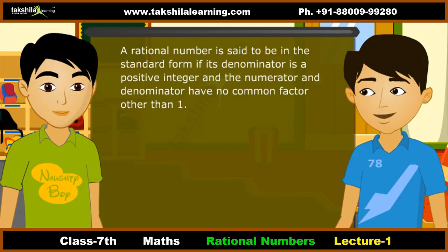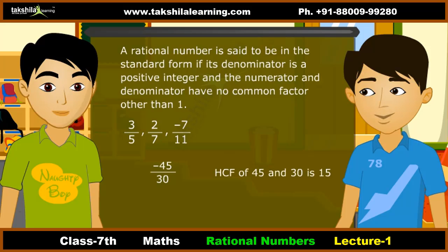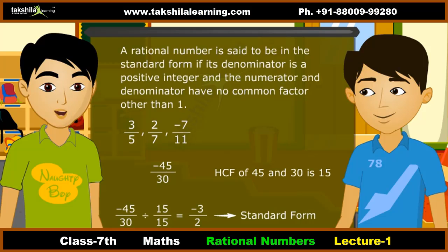All these rational numbers are in the standard form because their numerator and denominator have no common factor other than 1. If a number is not in standard form, it is reduced to standard form. For example, minus 45 by 30 is not in standard form. We divide the numerator and denominator by their HCF, which is 15, to get minus 3 by 2 — which is in standard form.